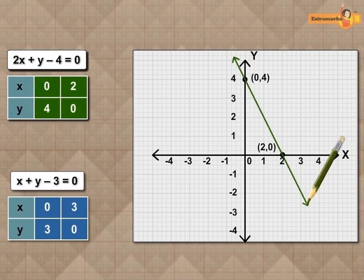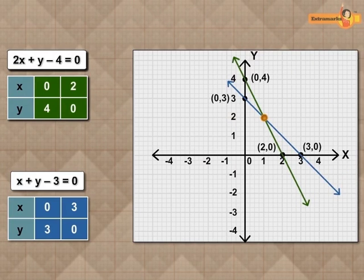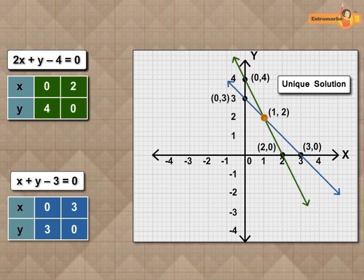Graphically, we observe that the given lines intersect each other at only one point, which is (1, 2). So, there is a unique solution for the given pair of linear equations.